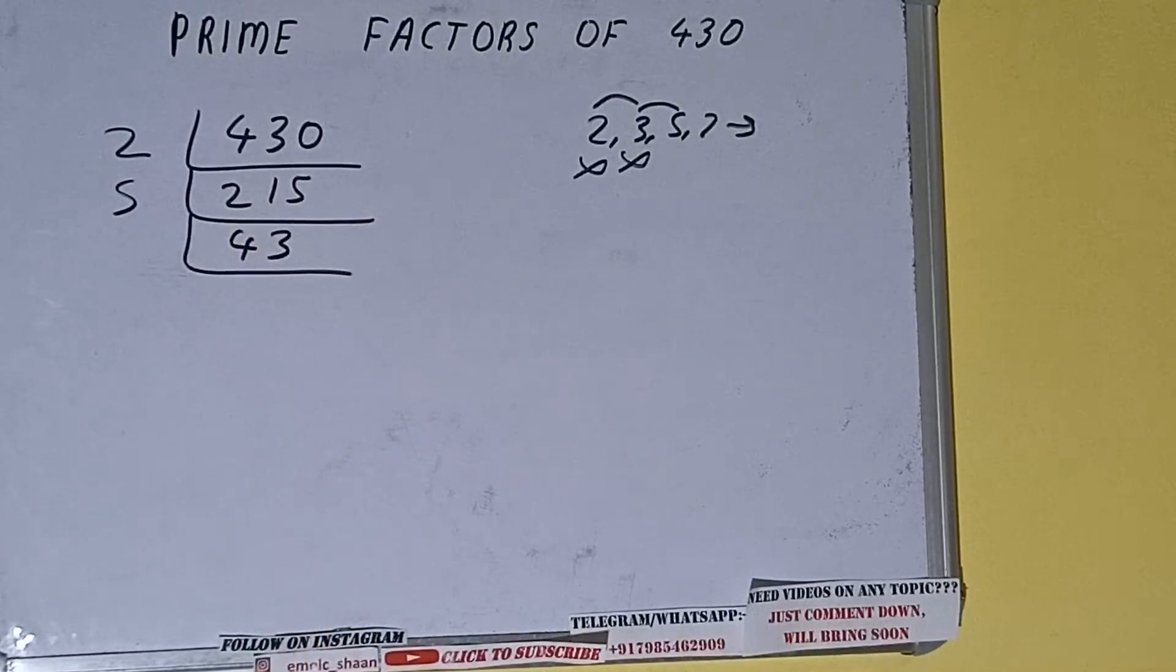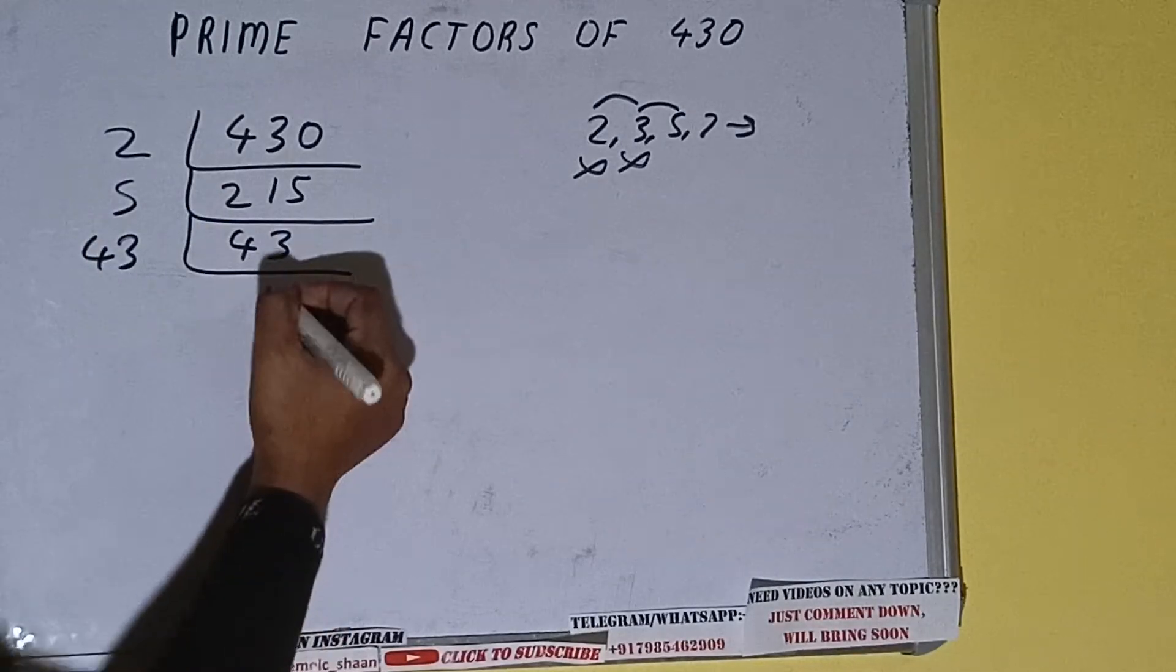We'll be having 43, and 43 is further not divisible by 5 because 43 is itself a prime number. So it is only divisible by itself, that is 43, and once we do so we'll be getting 1.